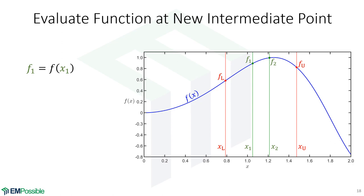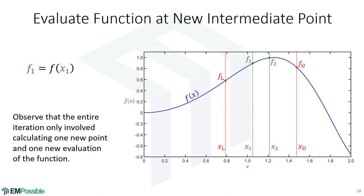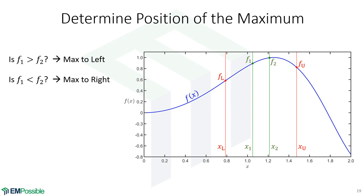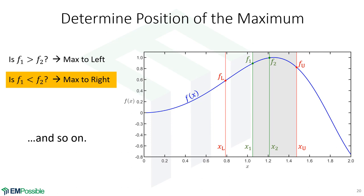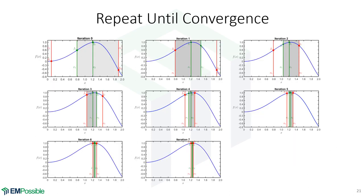Now that we know where x1 is, we have to call the function and evaluate it at x1. Again, we've gone through a whole new iteration and only had to call that function once — all the other three were just copies from the previous iteration, no new function calls. Here we are with our new interval. In this case f1 is less than f2, so the maximum has to be on the right side. This repeats, closing in on the extremum.